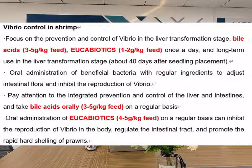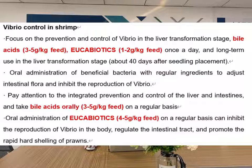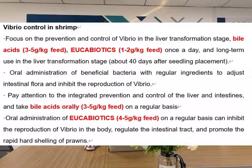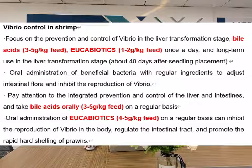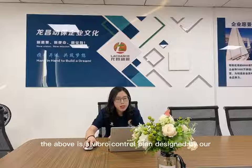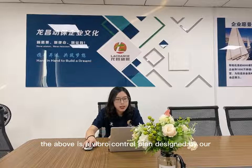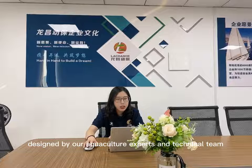Pay attention to the prevention and control of the liver and intestines. Take bio-assays orally at 3 to 5 g per kg feed on a regular basis, and oral administration of eukabiotics at 4 to 5 g per kg feed on a regular basis can inhibit the production of vibrio in the body, regulate the intestinal tract, and promote the rapid hard-shelling of shrimp. The above is the vibrio control plan designed by our aquaculture experts and technical team.